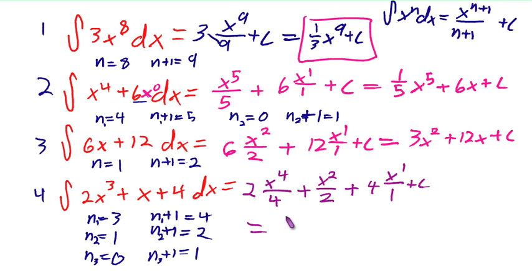x to the 3 plus 4x to the 2 over 2 plus 4x to the 1 over 1 plus c. I'll simplify it to 1/2 x to the 4th plus 1/2 x squared plus 4x plus c.